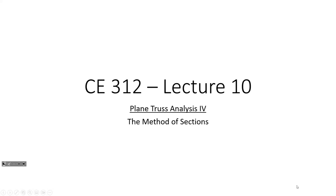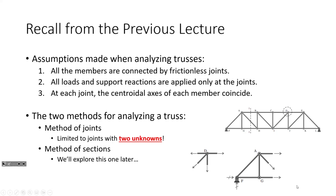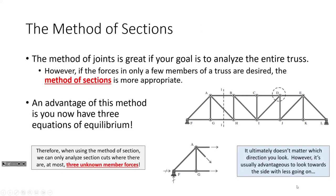Let's go back to our assumptions and where the method of joints shines. Our three assumptions have baked into them the notion that members contain only axial loads, so each member only has one unknown force present. When we apply the method of joints, because we are dealing with concurrent force systems, there are no moments inside individual joints. We are limited to joints with two unknowns, so it's tedious — we have to analyze joints one by one. The thing about the method of sections is that we are able to solve for an additional unknown with a given section cut.